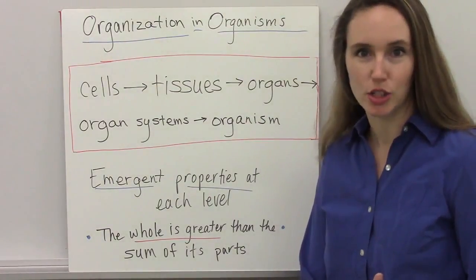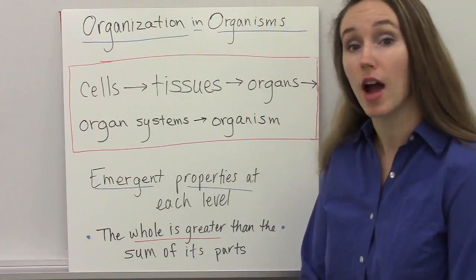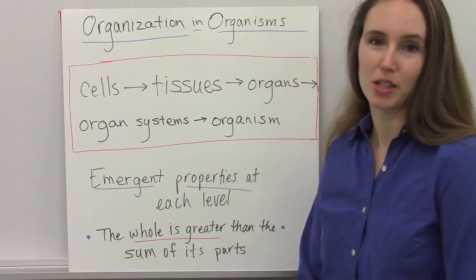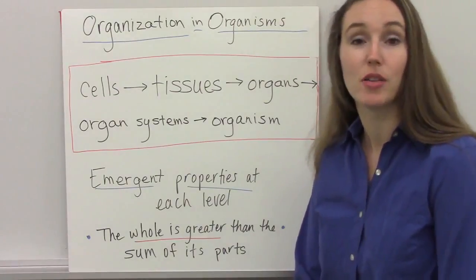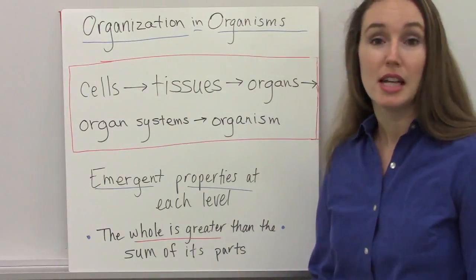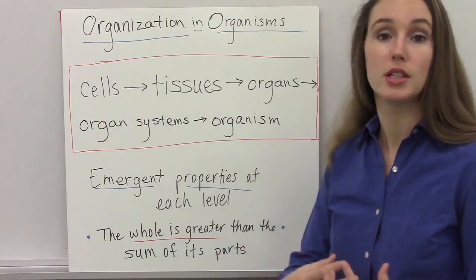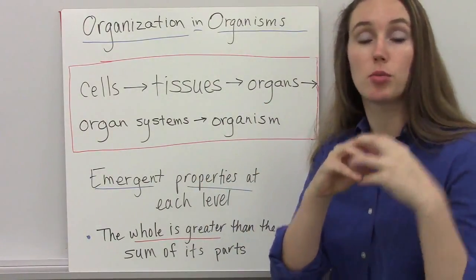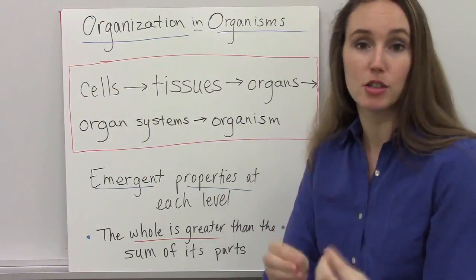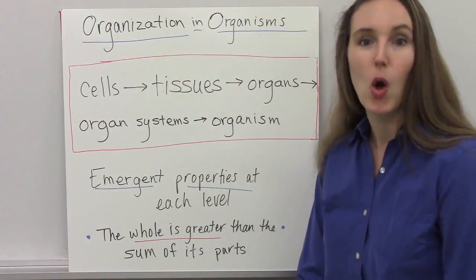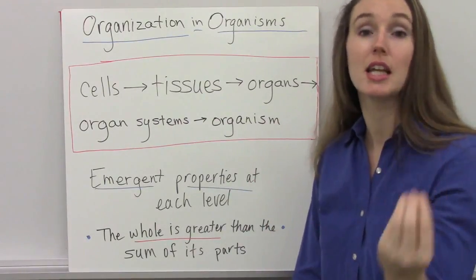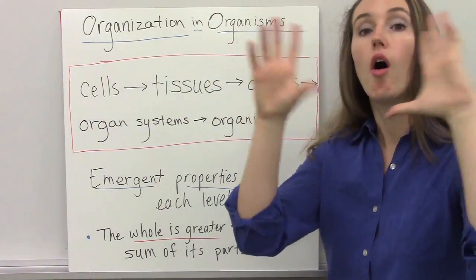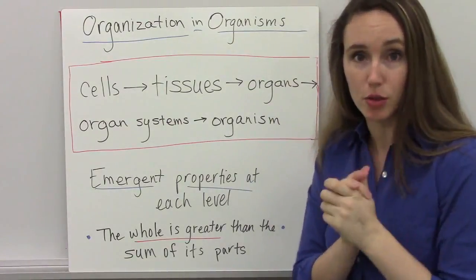One of the big ideas in biology is that biological systems interact, and these systems and their interactions possess complex properties. We've already looked at how the environment is broken down into ecosystems, which are further broken down into abiotic factors, communities, and communities are broken down into populations and populations into individual organisms. In this video, we're going to take it to an even deeper level, from organism all the way down to the cellular level.